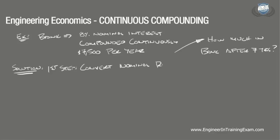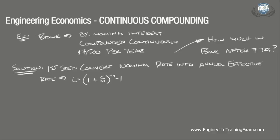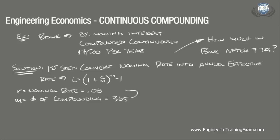Our first step will be to convert this nominal rate into an annual effective rate. This can be determined by using the non-annual compounding formula found on page 114 of the NCEES Supplied Reference Handbook. The formula is: I equals (1 + R/M)^M minus 1, where R is our nominal annual interest rate, which in this case is 8% or 0.08, and M is the number of compounding periods per year, which equals 365. Plugging these values in, we get I equals (1 + 0.08/365)^365 minus 1, which equals 0.0833.